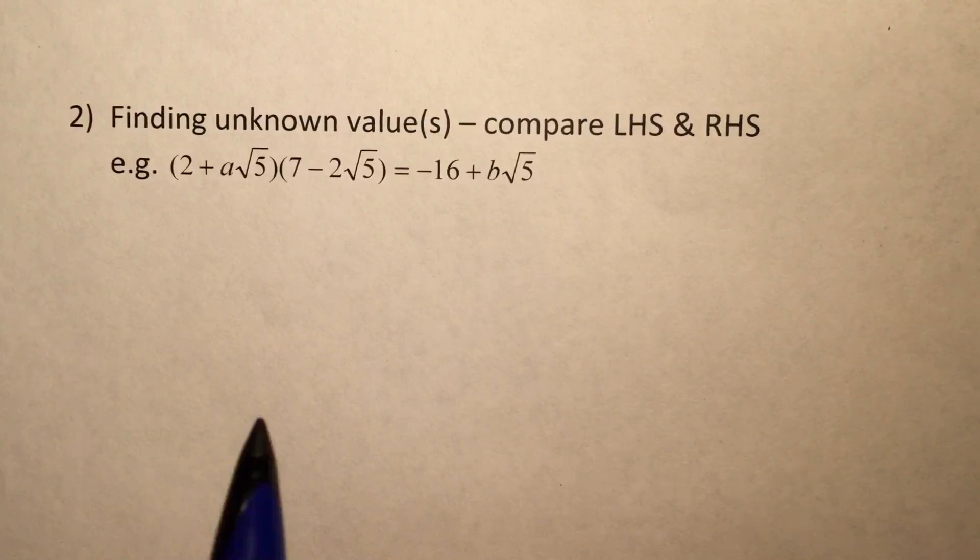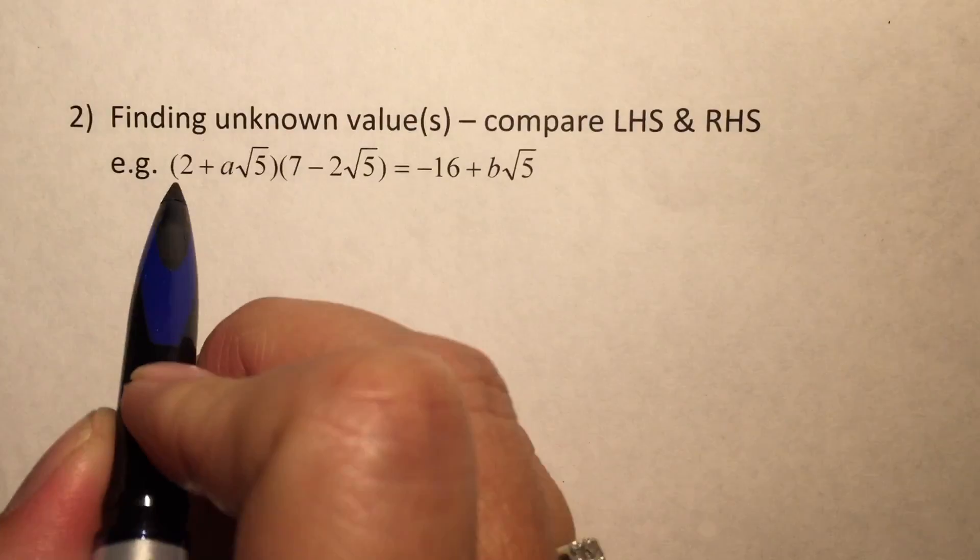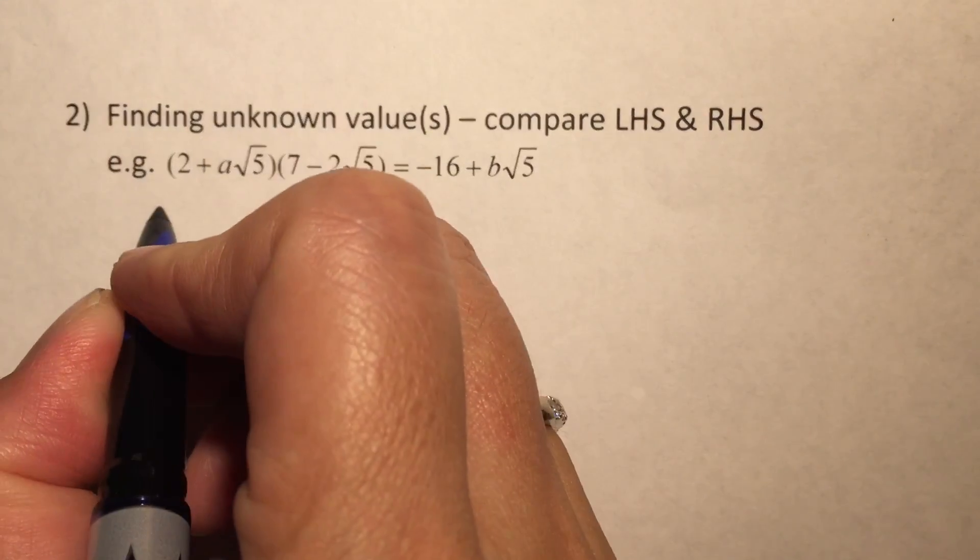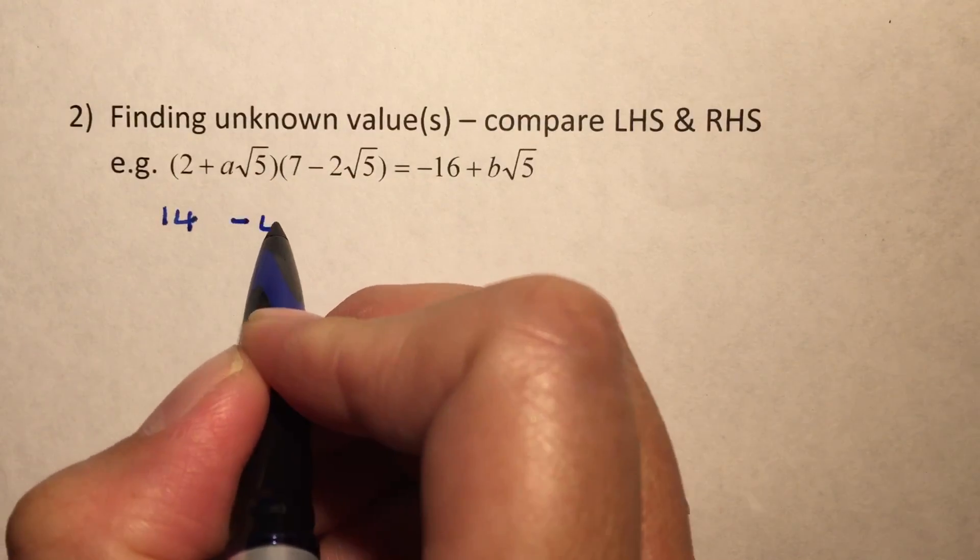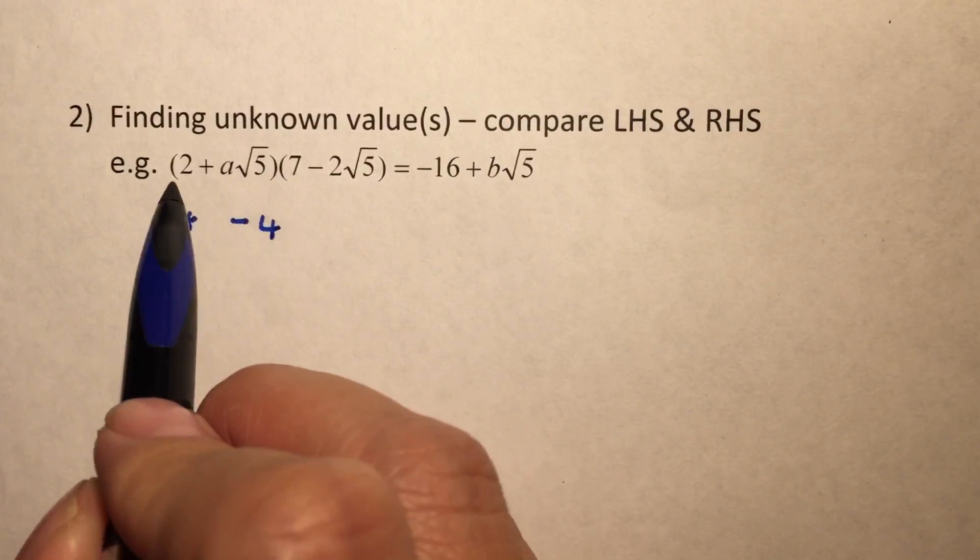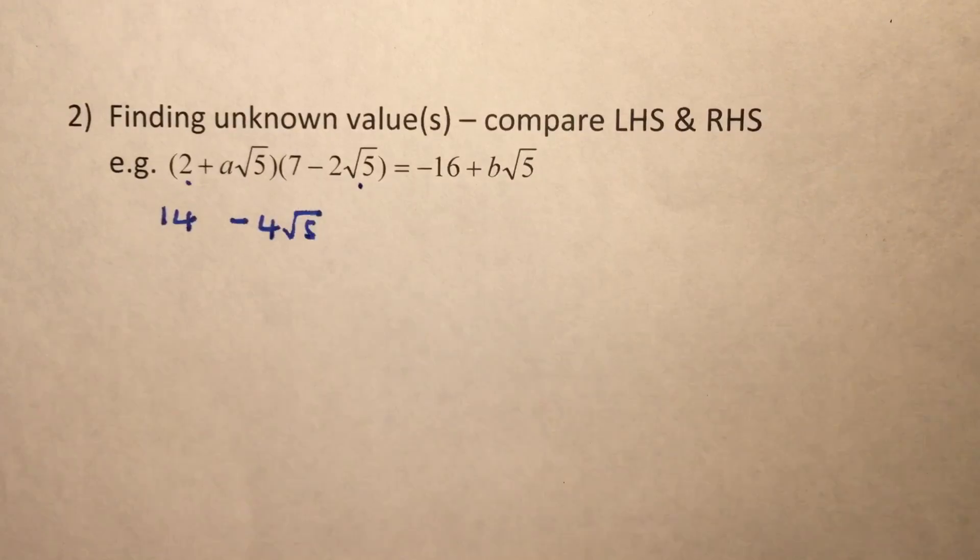So the very first thing that we will have to do is to expand out the left-hand side first. So we have 2 times 7, which will give us 14, 2 times negative 2, which will give me minus 4 or negative 4. Then I have a √5 here. So this is this expansion here.